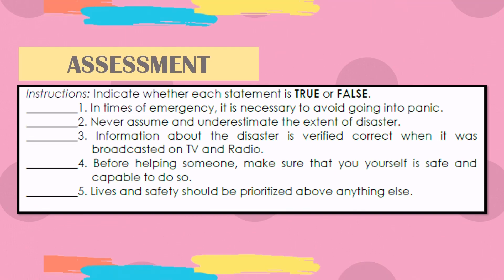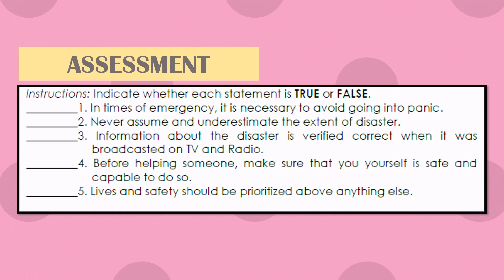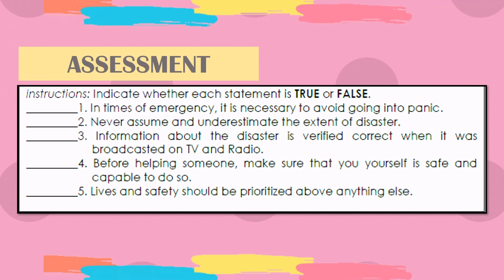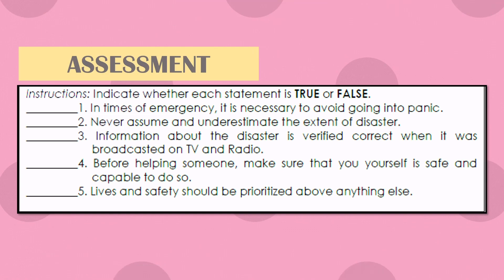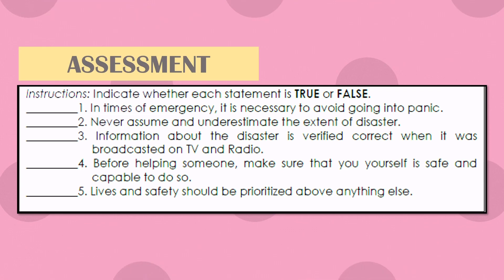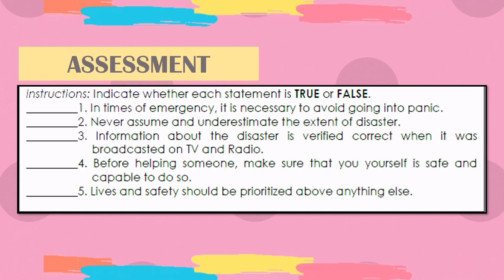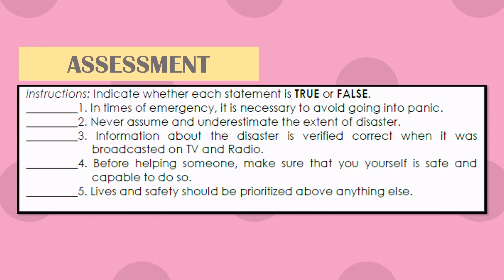Now for your assessment, indicate whether each statement is true or false. Number one: in times of emergency, it is necessary to avoid going into panic. Number two: never assume and underestimate the extent of disaster. Number three: information about a disaster is verified correct when it was broadcasted on TV and radio. Number four: before helping someone, make sure that you yourself are safe and capable to do so. And number five: lives and safety should be prioritized above anything else.